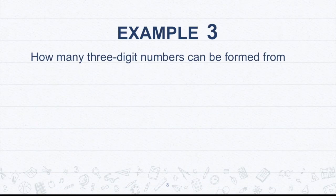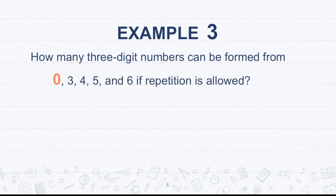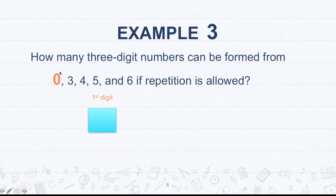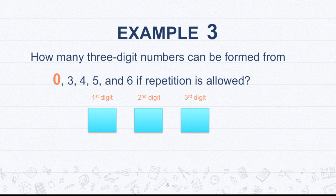Example 3. How many three-digit numbers can be formed from 0, 3, 4, 5, and 6 if repetition is allowed? Now let's look at zero. So why is it bigger than the rest? I would like to emphasize here zero. Why? Because first digit, if we're finding out the number of three-digit numbers that we can come up with, do you think the first digit can be zero? Of course not. So this is a restriction that we must need to satisfy. So first digit cannot be zero.